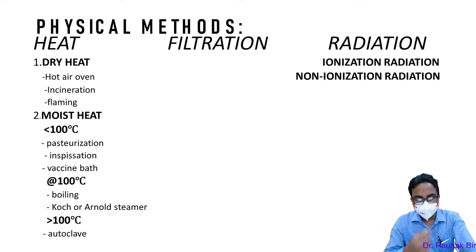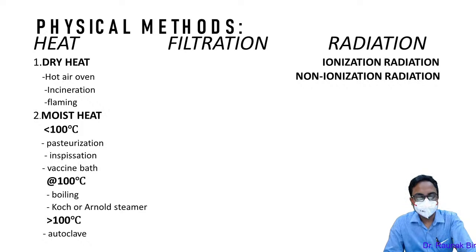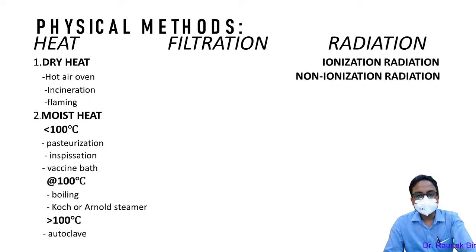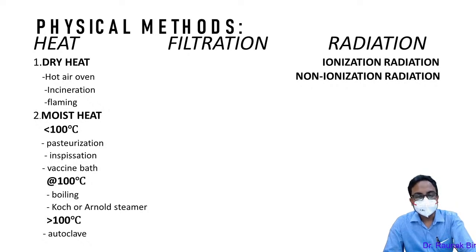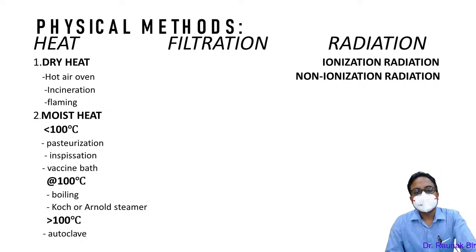Moist heat is basically regarding the latent heat that steam or moist air transfers to the surface of the object. That transfer of heat causes coagulation of protein and destruction of the microorganism. We have three classifications depending on the final temperature: below 100°C we have pasteurization, done mostly for milk, or inspissation and vaccine bath; at 100°C we can do boiling or steaming by Koch and Arnold steamer; and above 100°C, the most important method is autoclaving.